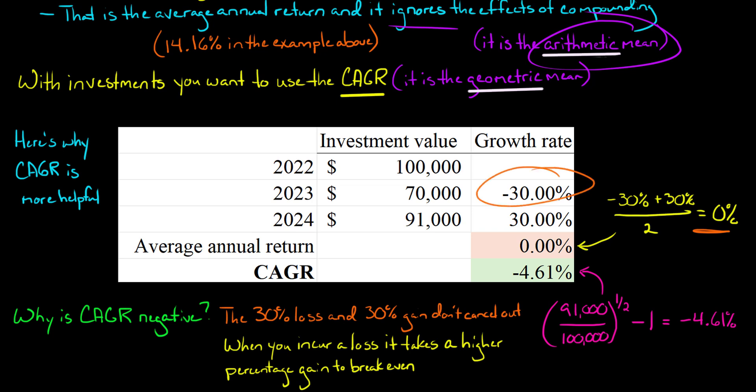So basically when you, as an investor, incur a loss, it's going to take a higher percentage gain than that loss to get back to even. So you lose 30% and you say, maybe next year it'll go up. My investments will go up 30%. You're not even. You've still lost money. So you're going to need a return higher than 30% to get back to even.